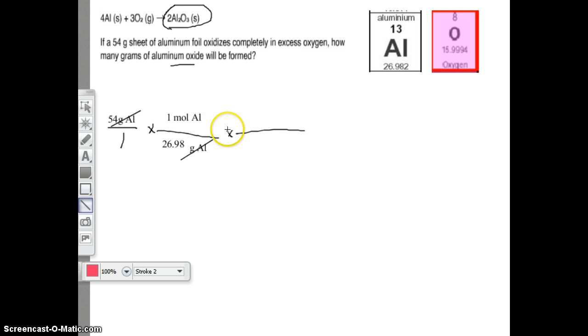Now we want to put moles of aluminum on the bottom of our next fraction. Our moles of aluminum are going to cancel off. What are we converting to? We want to get to Al2O3. How do we convert from one thing to another? The magic of the mole. We look at our balanced chemical equation. How many Al2O3s do we have? We have two of them. And how many aluminums do we have? We have four in our balanced chemical equation.